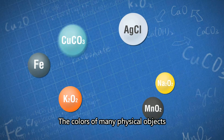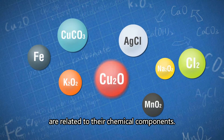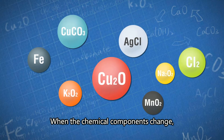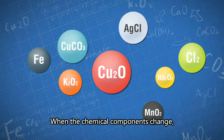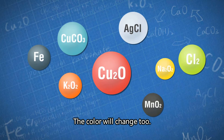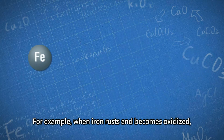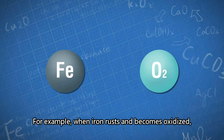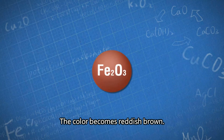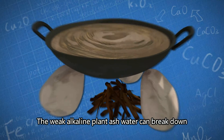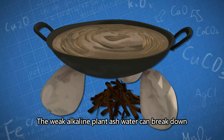The colors of many physical objects are related to their chemical components. When the chemical components change, the color will change too. For example, when iron rusts and becomes oxidized, the color becomes reddish brown. The weak alkaline plant ash water can break down the chemical structure of the color pigment in the rainy.